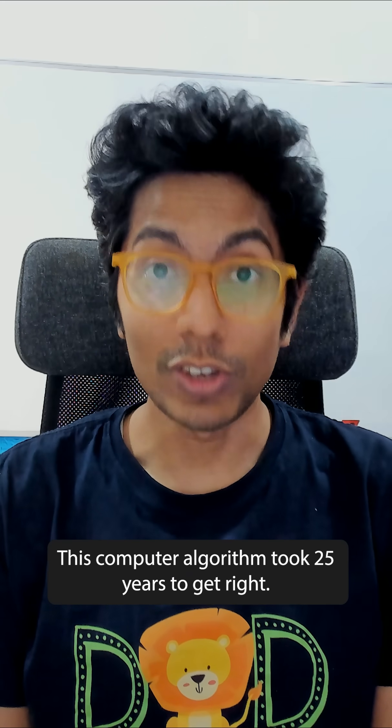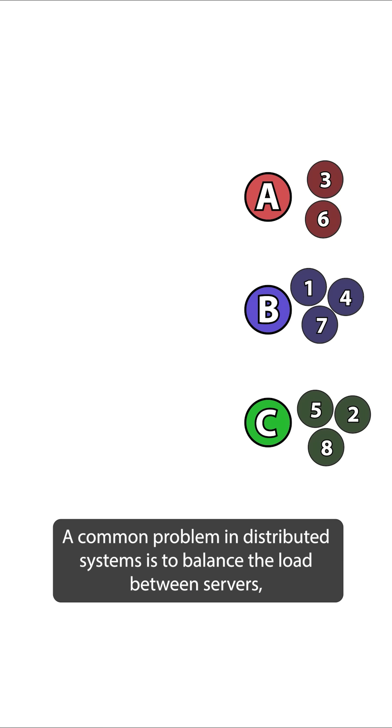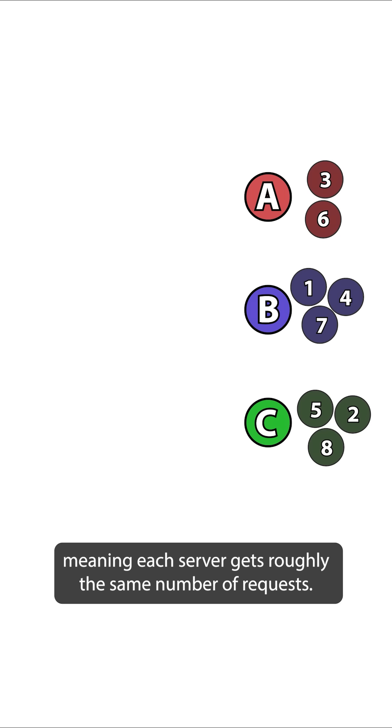This computer algorithm took 25 years to get right. A common problem in distributed systems is to balance the load between servers, meaning each server gets roughly the same number of requests.